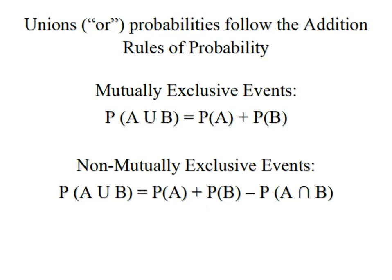we simply take the probability of A plus the probability of B, and this is because none of the items in our sample space are both A and B.